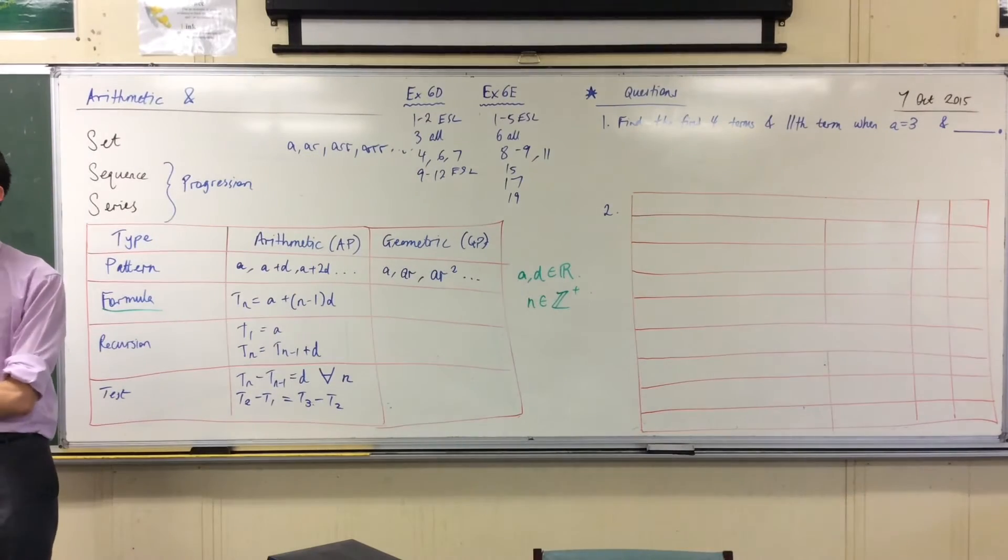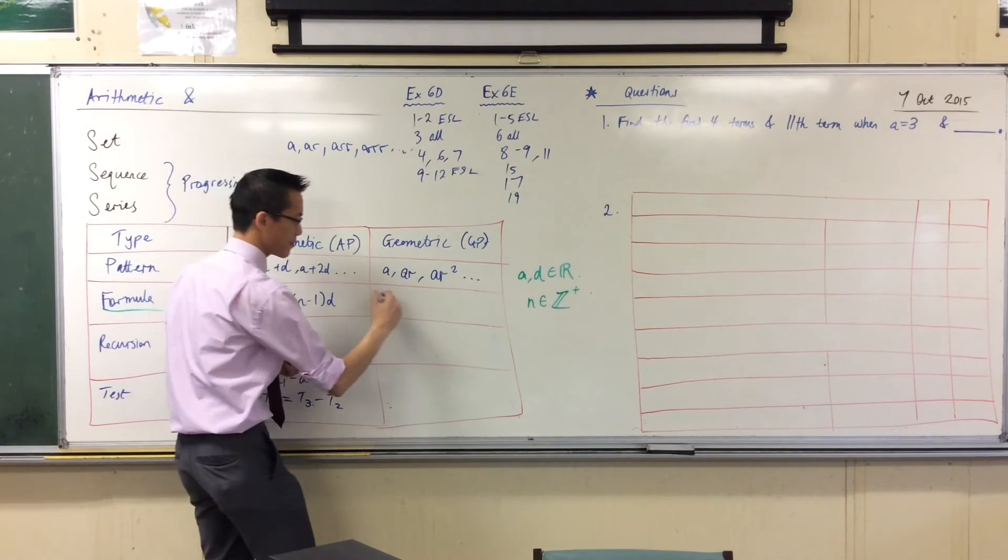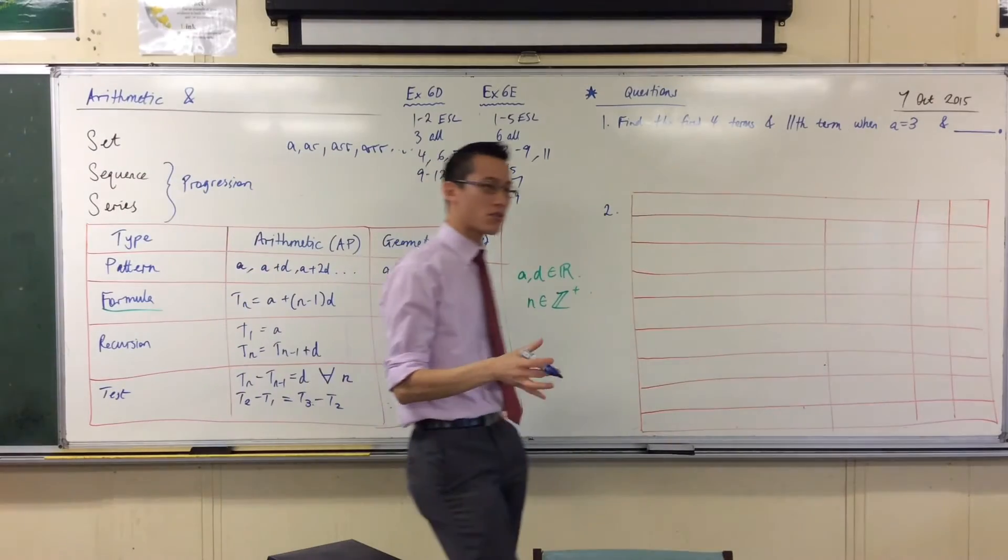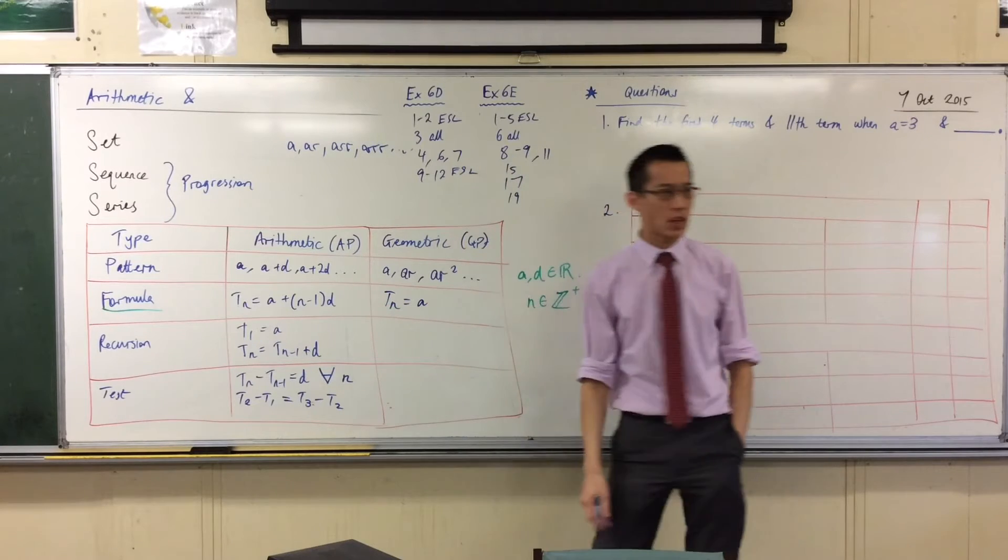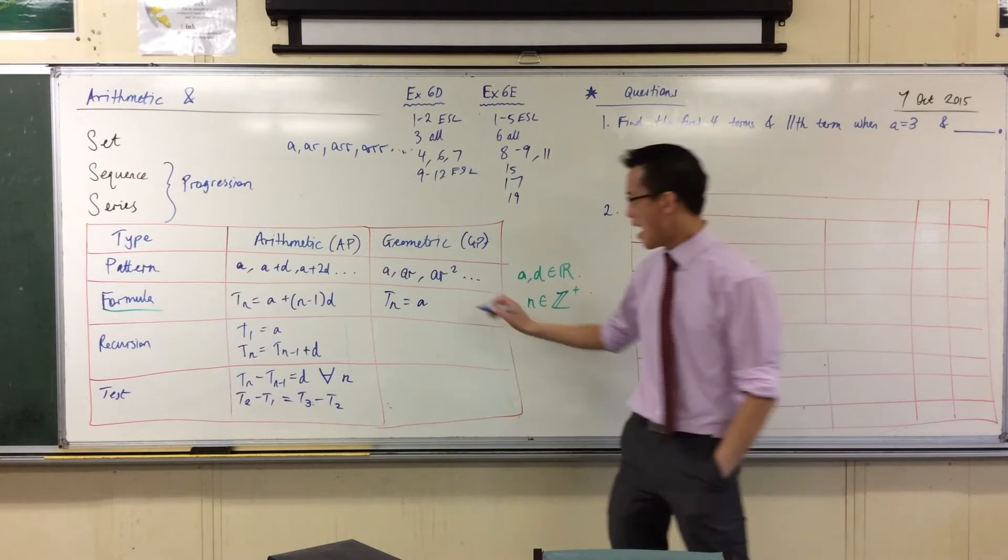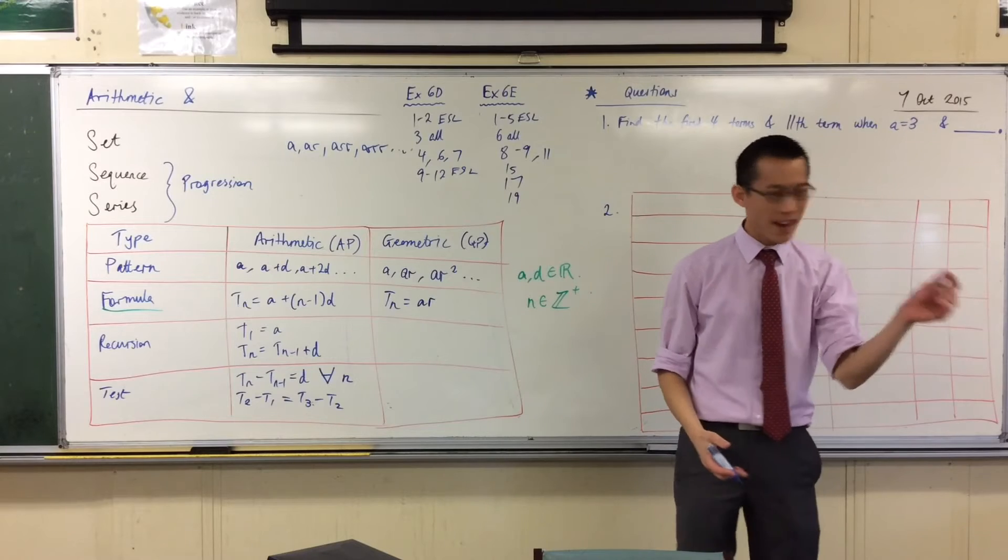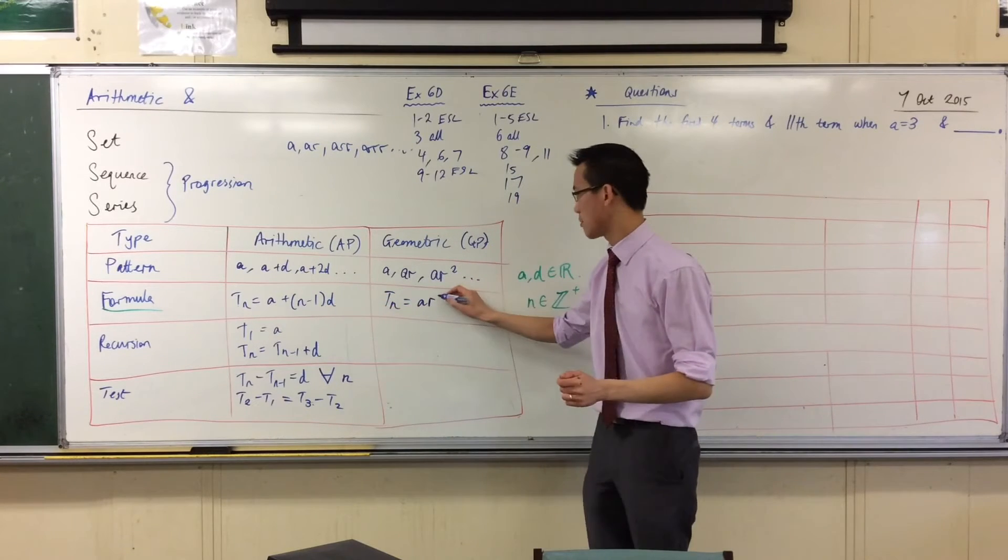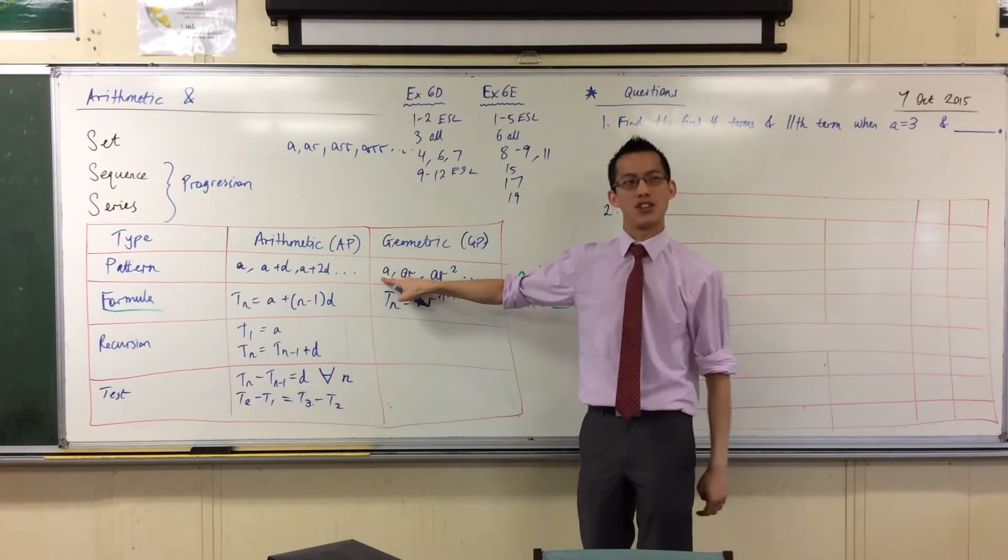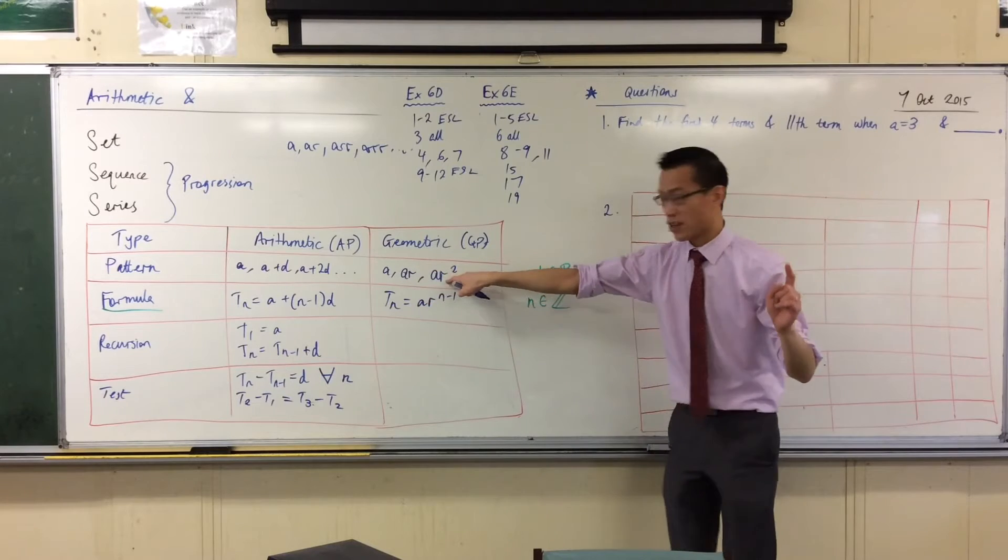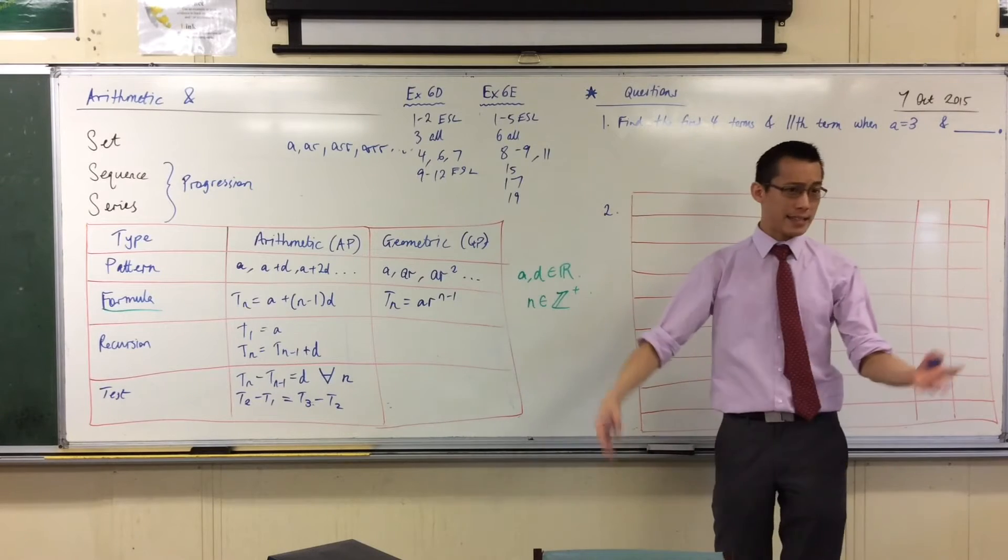Okay, now once we have the pattern, it therefore doesn't take much to work out what the formula for each nth term is going to be. And there's a striking similarity to our formula for the APs. I'm always going to start with A, I'm going to have that common ratio in there. How many common ratios does the nth term get multiplied by? And the answer is, just like with the common differences, it's going to be n minus 1. And you see that, the first term doesn't have any of the common ratio in it. The second term has one of them. The third term has two, et cetera. Okay, AR to the n minus 1.